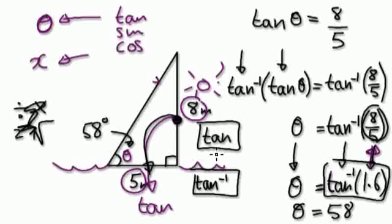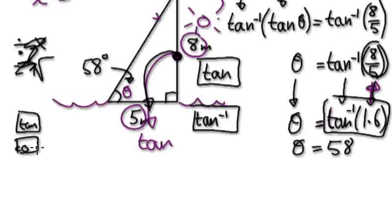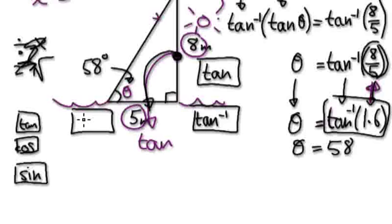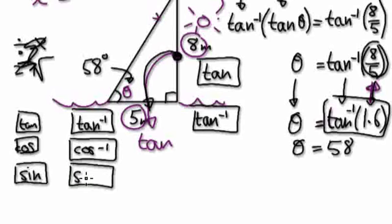So most calculators, you have a tan button, and then a cos button, and then a sine button. Well somehow, on your calculator, you should be able to get to tan to the power of minus 1. You should be able to get to cos to the power of minus 1, and sine to the power of minus 1. Well, these are inverses of these.